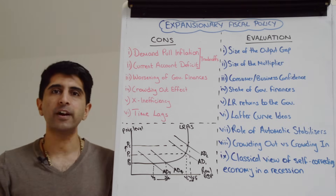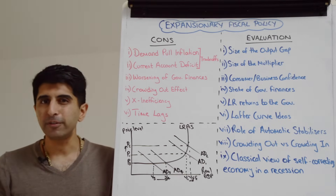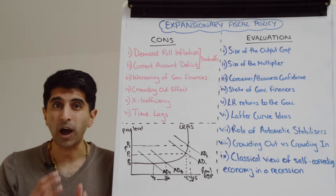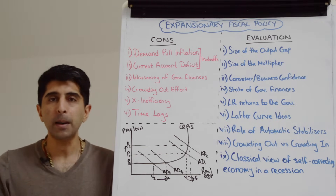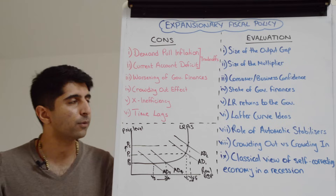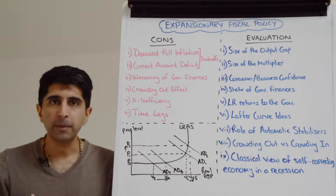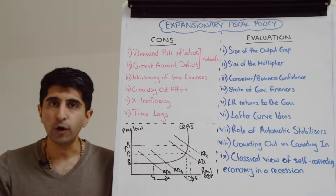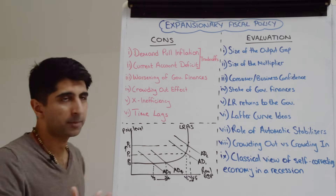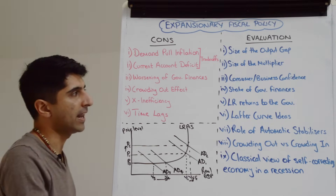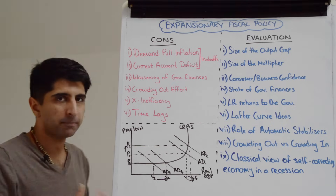Another key point is the current state of government finances before expansionary fiscal policy is enacted. If government finances are already in poor shape — with very high budget deficits or high levels of national debt — then expansionary fiscal policy may not be affordable, and the government might be breaking its fiscal rules. Conversely, if finances are stable with low deficits or a budget surplus, it can be afforded more comfortably.